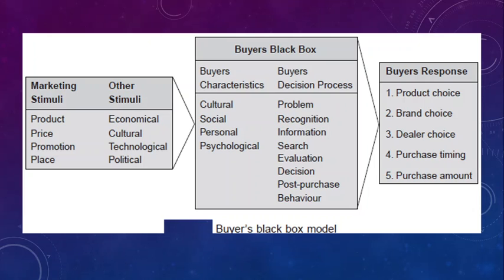In the buyer's black box model, there is also the buyer decision process — how the decision is carried out. When a customer encounters a problem, they search for information as a solution. They come up with options A, B, and C and need to pick one product. They evaluate which suits their budget and which product to choose. Finally, they decide and go ahead with the product or service, followed by post-purchase behavior — how the consumer behaves after purchasing the product.